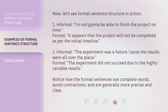Now, let's see formal sentence structure in action. 1. Informal: 'I'm not going to be able to finish the project on time.' Formal: 'It appears that the project will not be completed as per the initial timeline.' 2. Informal: 'The experiment was a failure, because the results were all over the place.' Formal: 'The experiment did not succeed due to the highly variable results.' Notice how the formal sentences use complete words, avoid contractions, and are generally more precise and clear.